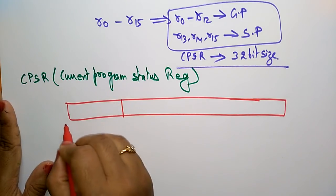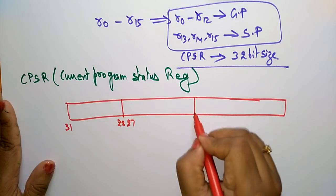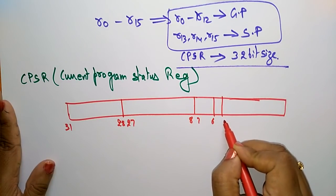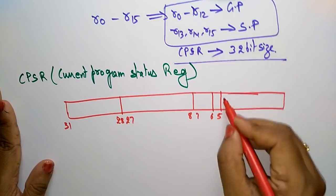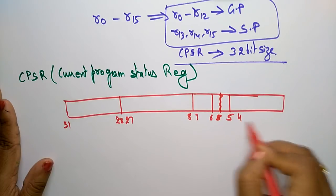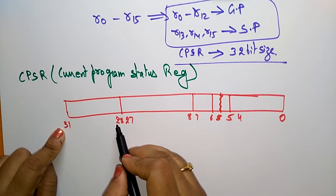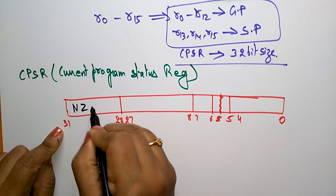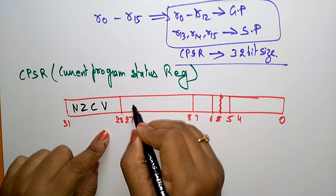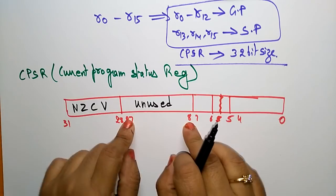The CPSR 32-bit register is divided as follows: bits 31 to 28 hold the flags N, Z, C, V. Bits 27 to 8 are unused — they are reserved for future purpose.